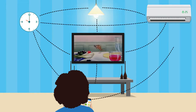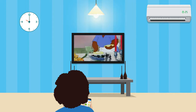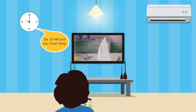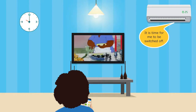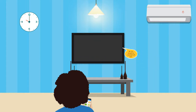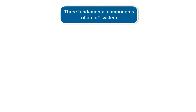Imagine your clock notifies your AC, TV, and light that it is 10 p.m. and they switch off themselves. It is 10 p.m. and you must sleep — so each device switches itself off. Isn't it interesting? But how does IoT work? Well, there are three fundamental components of an IoT system: sensor, software, and internet connection.